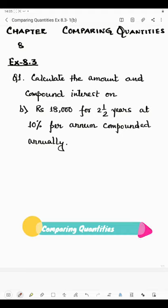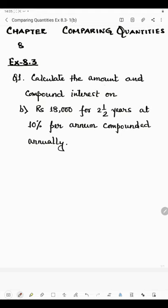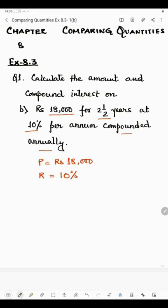Hello students, today I'll be starting with part B of question number one. In this part we have to calculate the amount and compound interest on rupees 18,000 for two and a half years at 10 percent per annum, compounded annually. Here 18,000 is the principal, two and a half is the number of years, and 10% is the rate of interest. The principal is rupees 18,000, rate of interest is 10 percent, and number of years is two and a half.